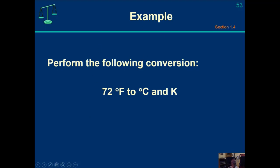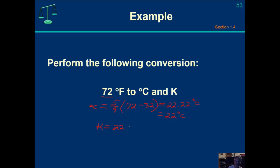Here's an example of a conversion: convert 72 degrees Fahrenheit to Celsius and then to Kelvin. Celsius equals 5/9 times (72 minus 32), which gives 22.22... repeating. Since we started with two significant figures and no decimal place, we round to 22 degrees Celsius. To convert to Kelvin, take 22 degrees Celsius and add 273, giving 295 Kelvin.